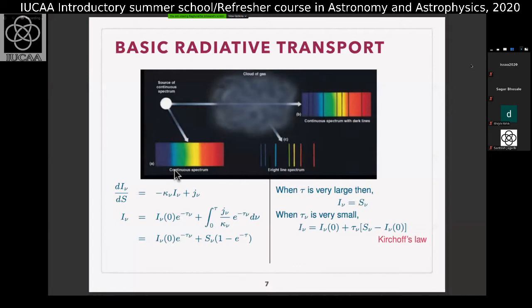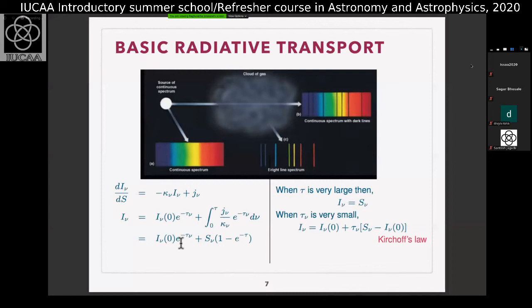The radiative transfer equation: dI/ds = -κ_ν I_ν + j_ν, where j_ν is local emission, I_ν is the intensity, and κ_ν is the absorption coefficient. The final equation for received photon intensity is I_ν = I_ν(0) e^{-τ} + S_ν(1 - e^{-τ}), where τ is the optical depth — the integral of κ times ds — and S_ν = j_ν/κ_ν is the source function.